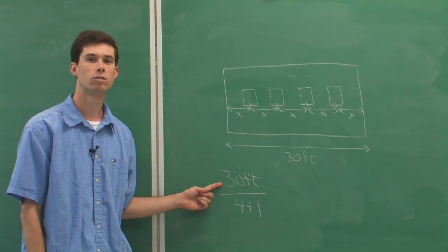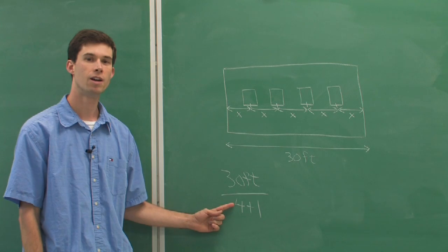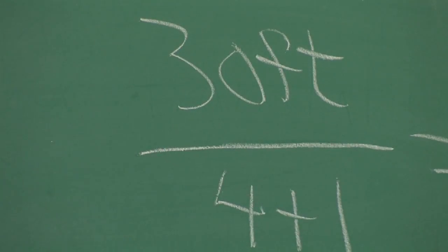We've got a 30 foot wall with four windows so we're going to divide 30 by one more than the number of windows that we have.